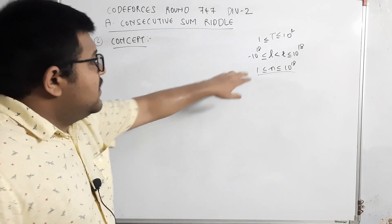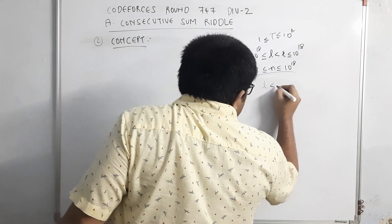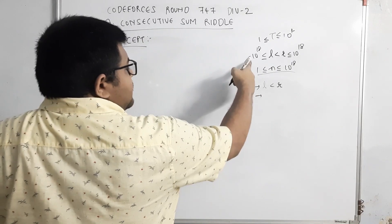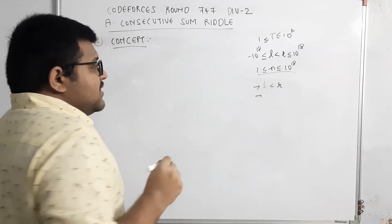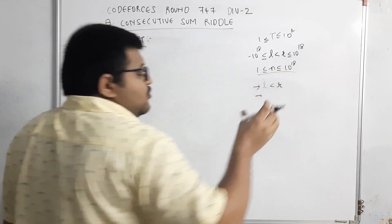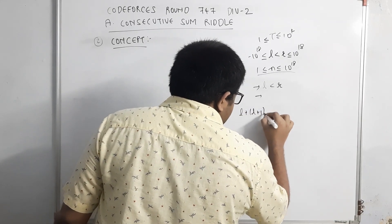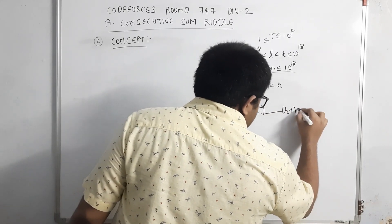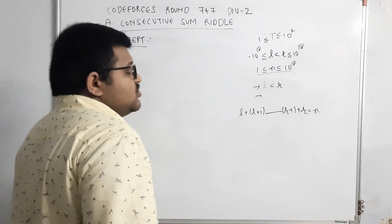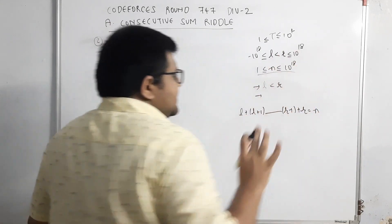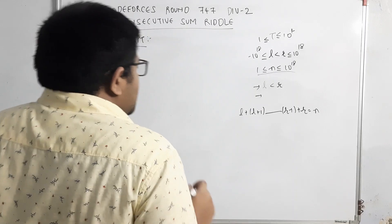Ab agar hum l aur r ke constraints dekhein, toh pehla yeh hai ki l should be less than r. Doosra, minus 10^18 se lekar 10^18 tak ja raha hai — iska matlab n ka jo bhi magnitude hai, jo bhi value humein chahiye as a sum from l to r equal to n, woh value ek individual element ke basis pe bhi present hai hamaari range mein.